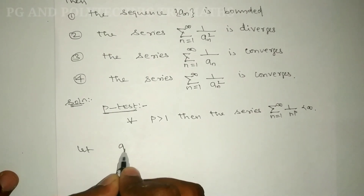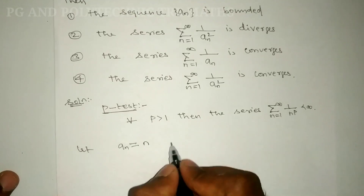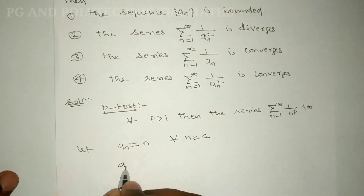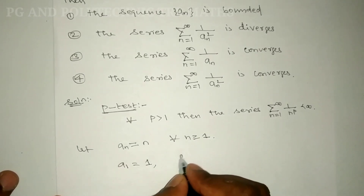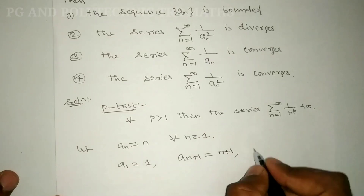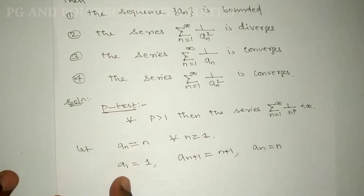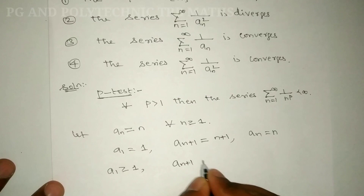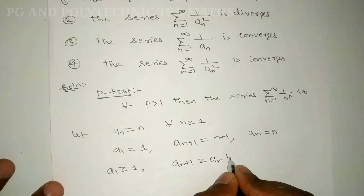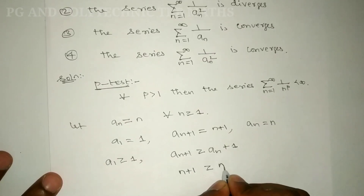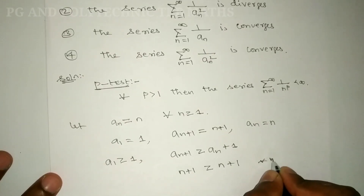Let a_n = n for all n ≥ 1. Then a₁ = 1, so the first condition a₁ ≥ 1 is satisfied. Also, a_{n+1} = n+1 and a_n + 1 = n+1, so a_{n+1} ≥ a_n + 1 holds for all n ≥ 1. Both conditions are satisfied.